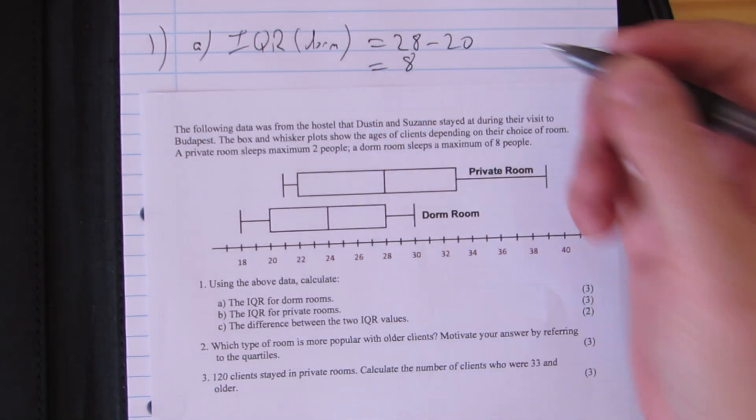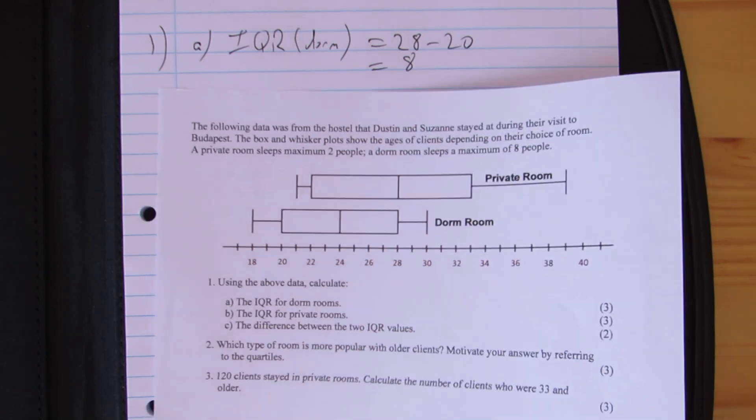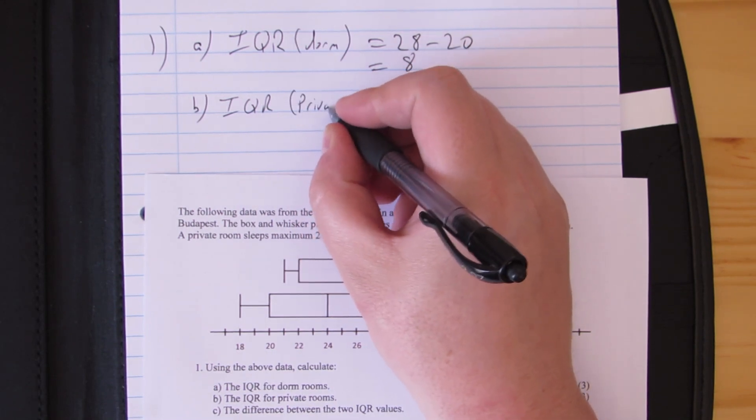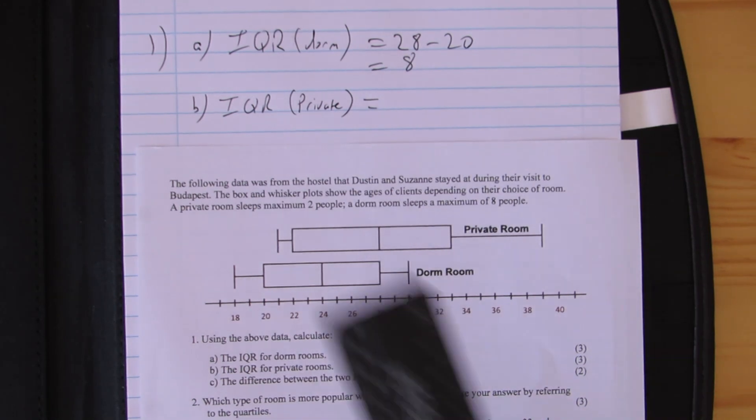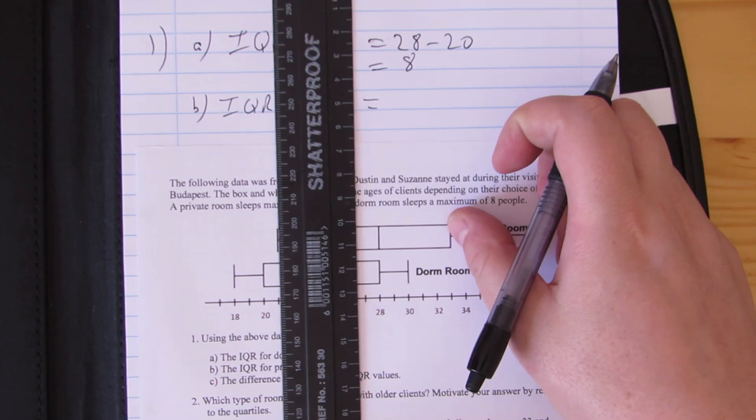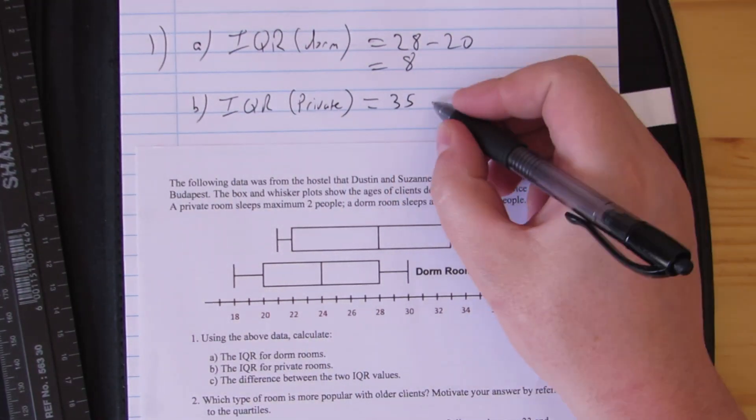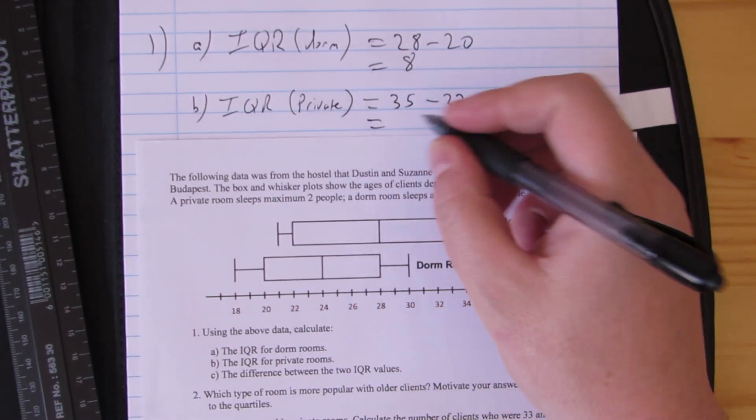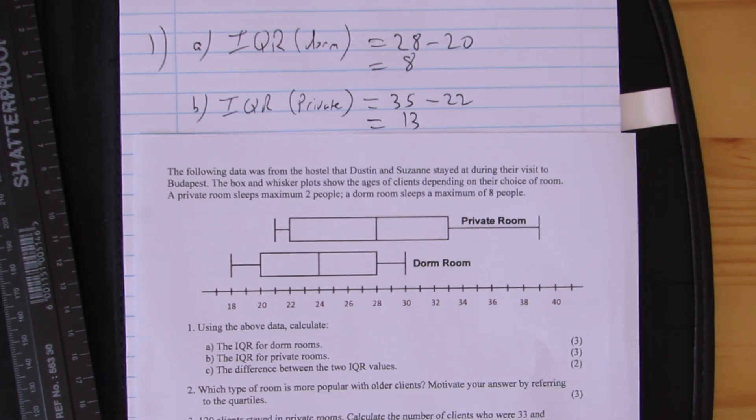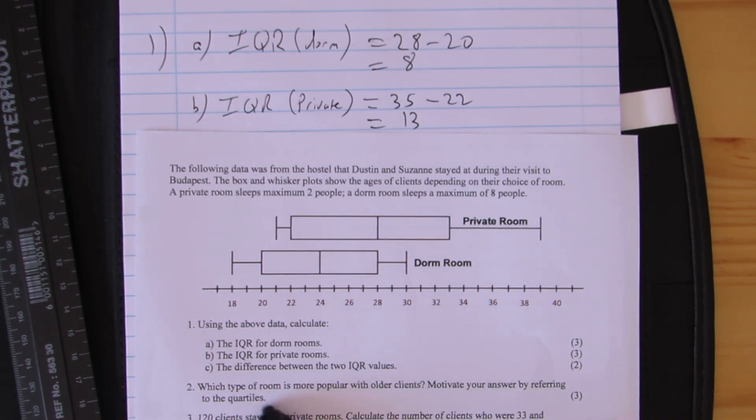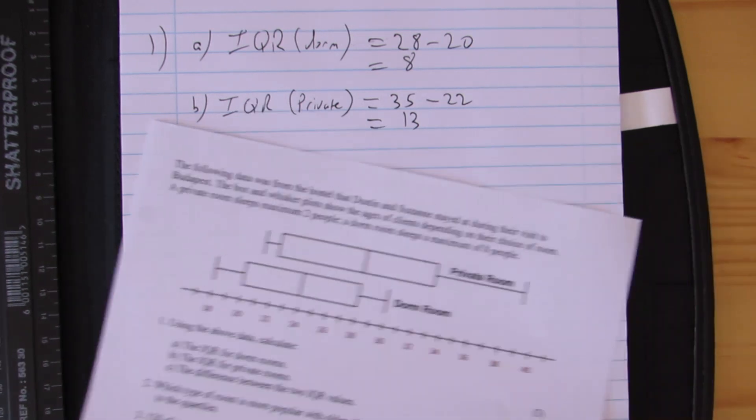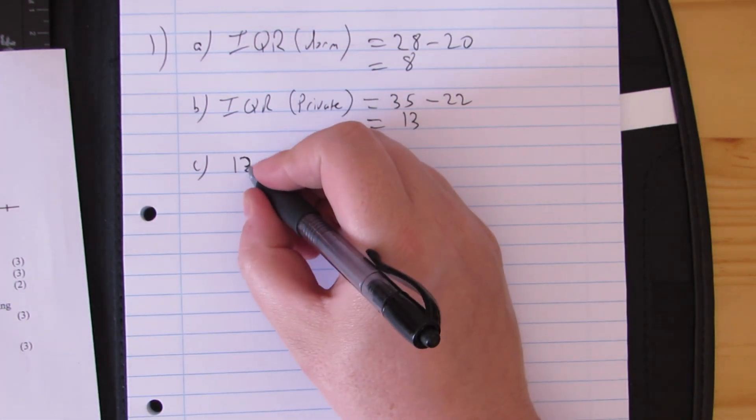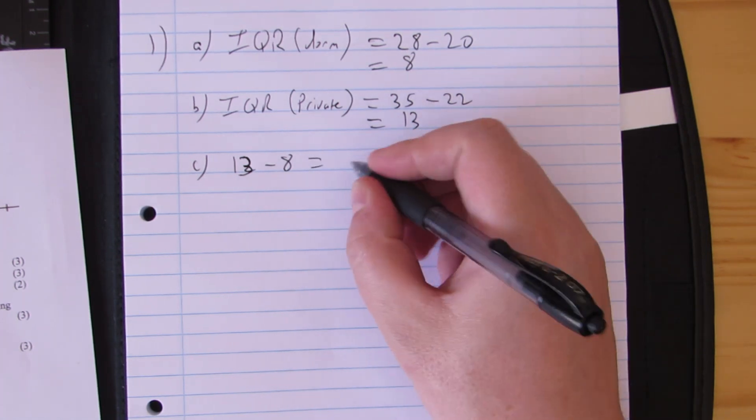Next, they ask us for the interquartile range for private. Looking at these two, my private room ends up at 35 - that's my Q3. My Q1, if I line this up, is at 22. If we subtract the two, that gives me an interquartile range of 13. And lastly, the difference between the two interquartile values: 13 minus 8 gives us a difference in our interquartiles of 5.